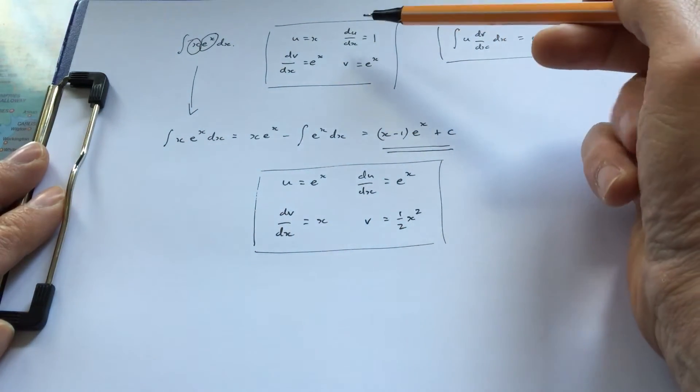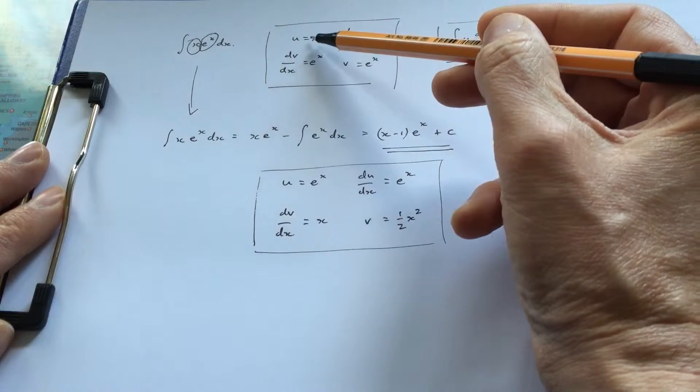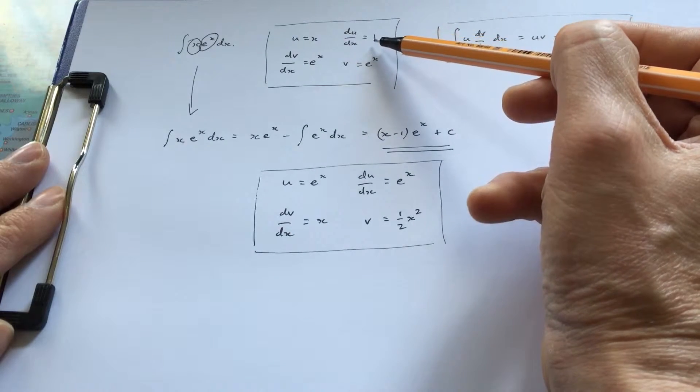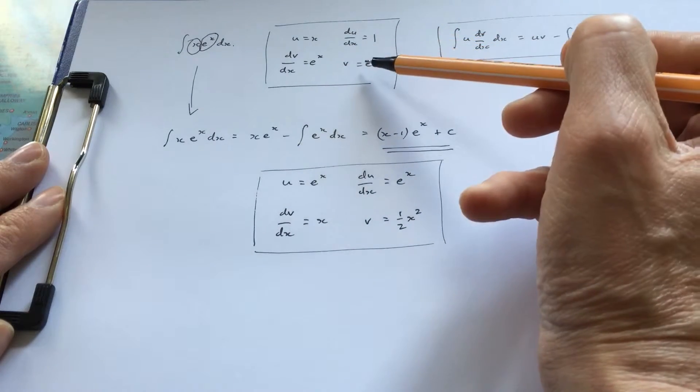When I did it the right way, x became simpler—it became 1, and e^x stayed the same.